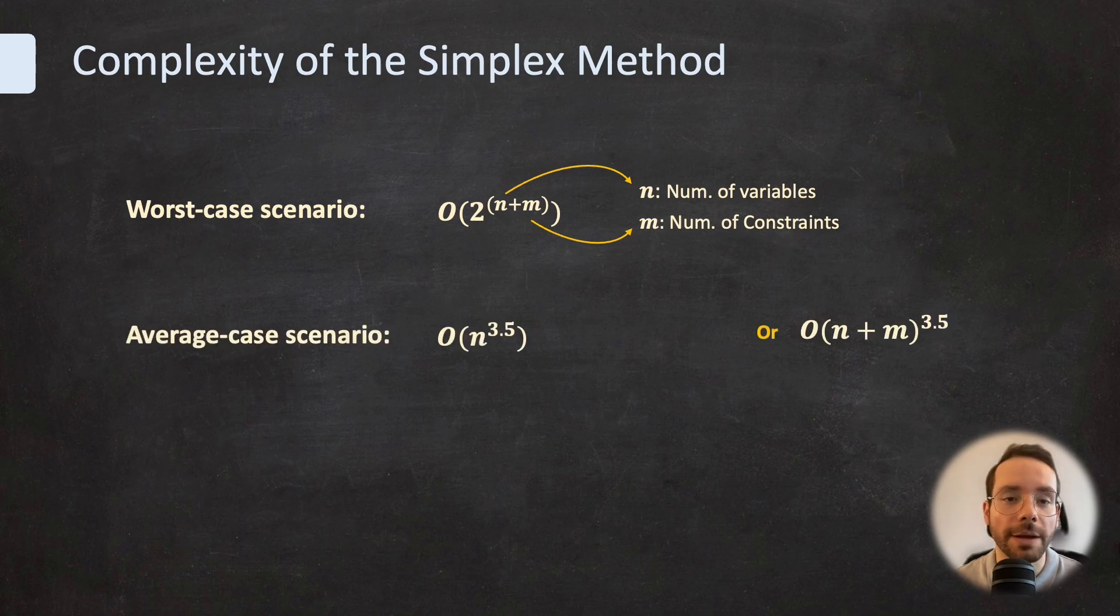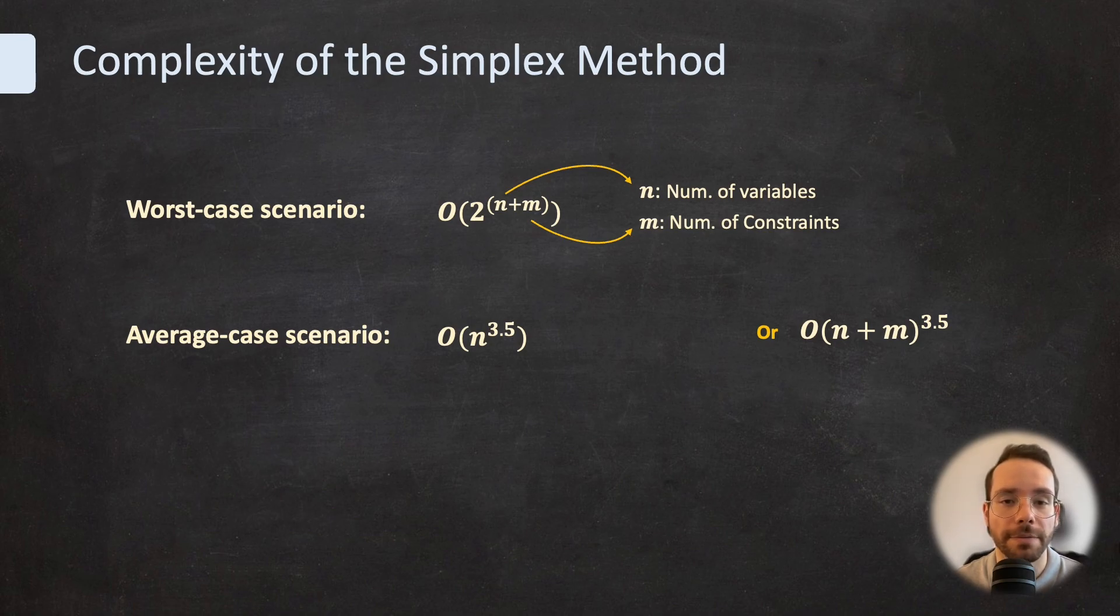When it comes to average time complexity, the simplex method usually performs much better. Studies show that the average case complexity is closer to a polynomial time around big O n to the power of 3.5. This means that for most practical LP problems, the simplex method will find the optimal solution in a reasonable amount of time.